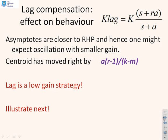OK, so this just summarized that. The asymptotes are now closer to the right half plane than they were before because we have moved the centroid right by this amount here, A(R minus 1) over (K minus M). And why might that be a useful insight? If the asymptotes are closer, then the likelihood is that we're going to need a smaller value of K before we start getting oscillation. And therefore lag is a low gain strategy. Now we're going to illustrate this through a number of examples.